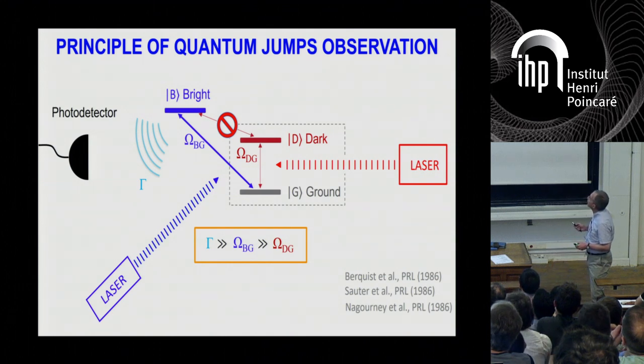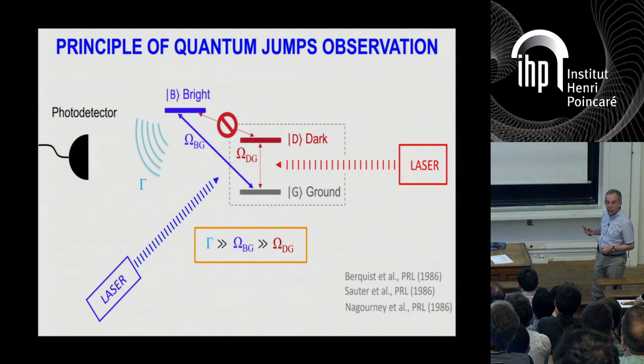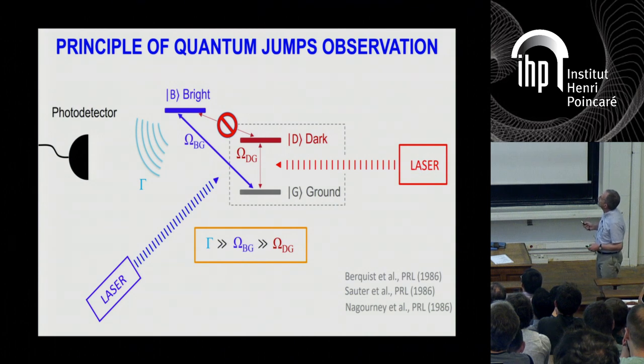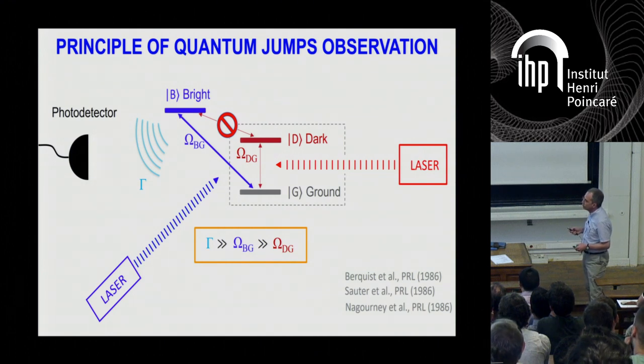In fact, there's an important hierarchy of scales in this experiment. So this driving, this Rabi drive between the ground and the dark state is the lowest frequency of the problem. Next, you have this much stronger Rabi drive here. And then you have a fluorescence decay rate, which is even faster. So essentially, when the system is in B, it falls very quickly to G.